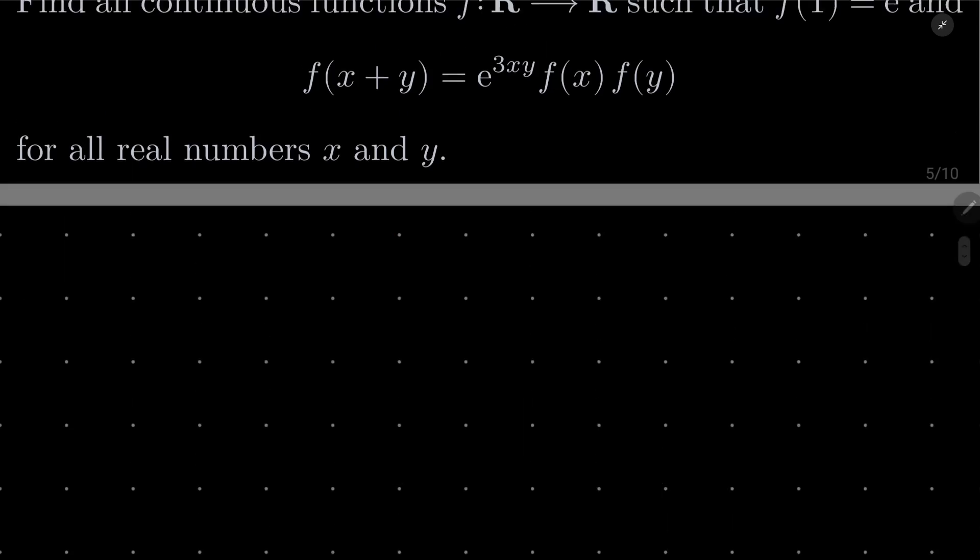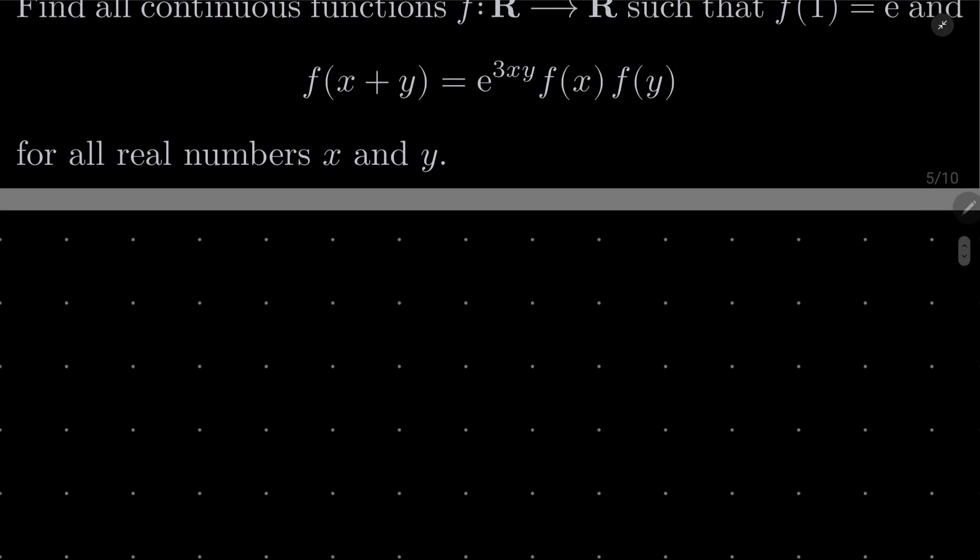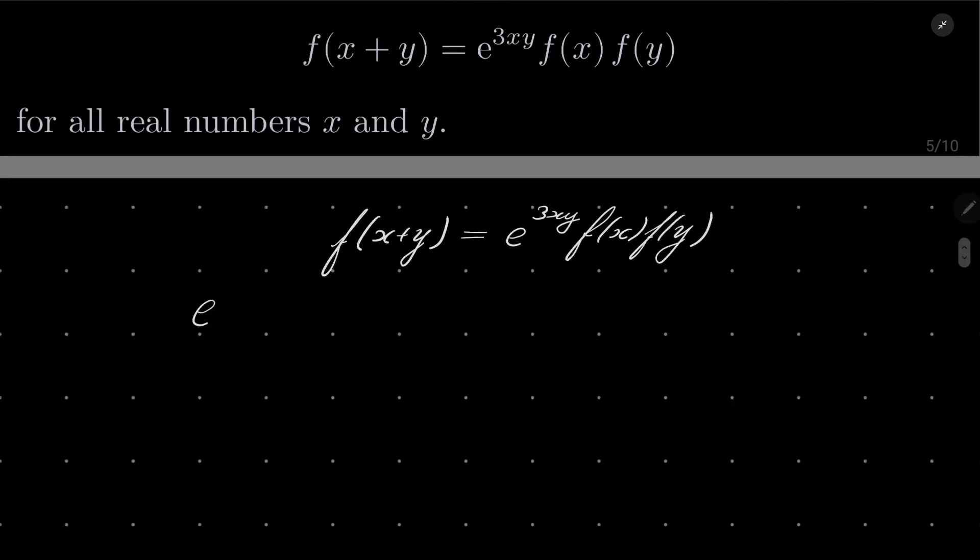Okay, so here is my solution. First, as I suggested, I will take my equation and I will multiply both sides by e to the power 3 over 2x squared, e to the power 3 over 2y squared, both sides.